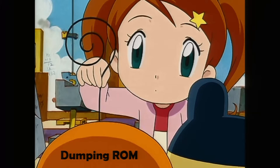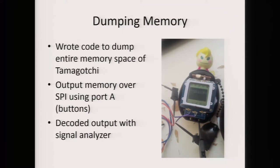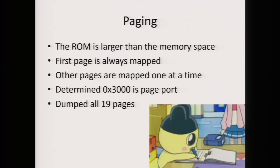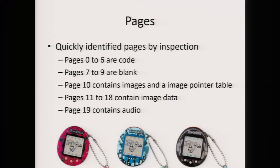The next thing I wanted to do was dump the Tamagotchi's ROM. I broke out the button lines on port A, then wrote out the entire memory space using SPI and analyzed it with my signal analyzer. Unfortunately this wasn't the entire ROM, because the ROM is much larger than the memory space — it uses ROM paging. The first page of ROM is always mapped in the upper half of addresses, and the lower half can be different parts of ROM depending on a register. Looking at the first page I figured out this register was 0x3000. I was then able to dump all 19 pages of ROM. Pages 0 to 6 were code, pages 7 to 9 were unused, page 10 contained a pointer table for images, pages 11 to 18 contained images, and I don't know what page 19 contains — I'm figuring it's audio.